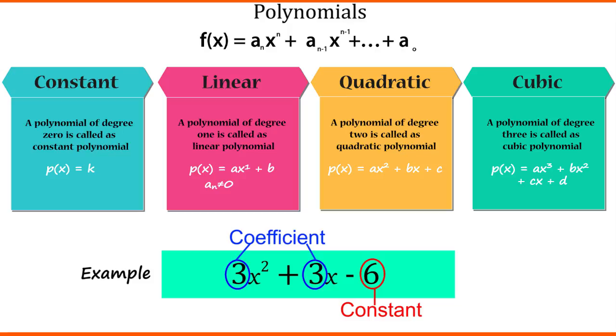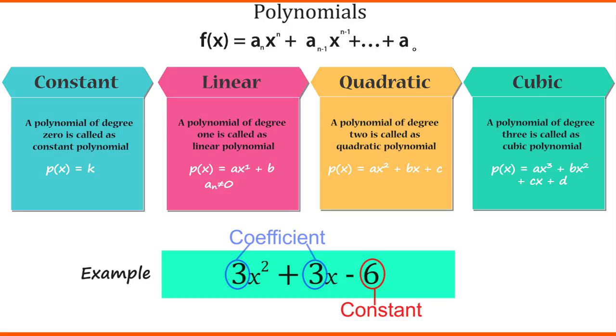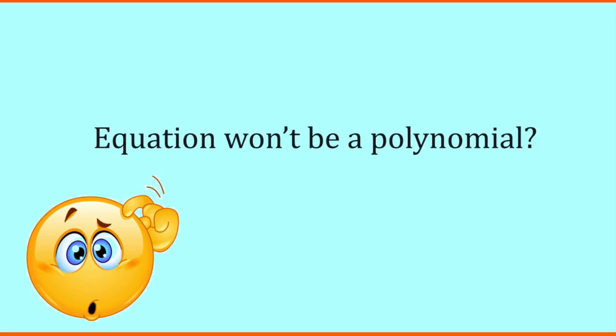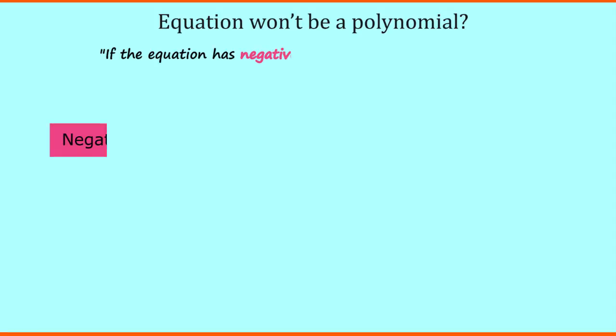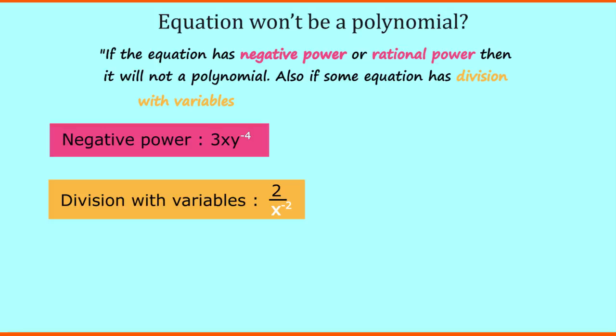Now as we have understood what are polynomials, it is equally important for us to know when a specific equation won't be a polynomial. If the equation has negative power or a rational power, then it will not be a polynomial. Also, if some equation has division with variables, then it will also not be a polynomial.